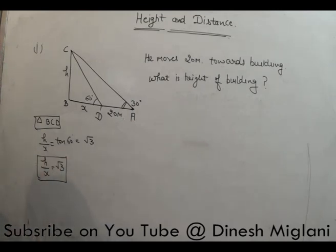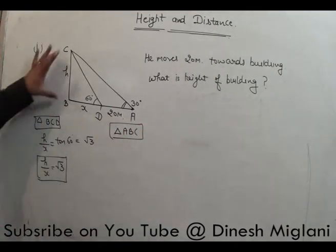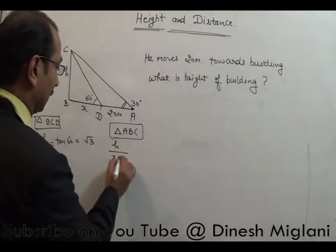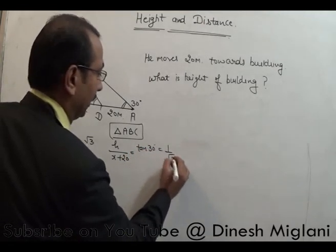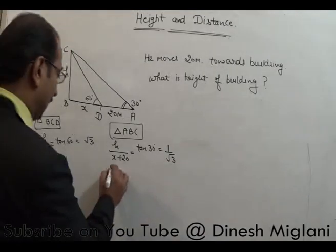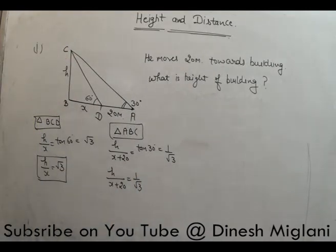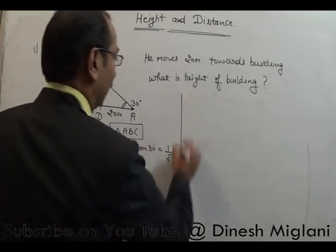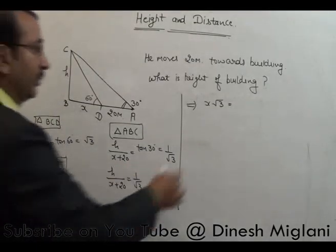Then we take triangle ABC. Here, perpendicular upon base gives H upon (X plus 20) equal to tangent 30, which is 1 by root 3. So H upon (X plus 20) equals 1 upon root 3. Now we have two equations. From the first equation, H equals X root 3. From the second, H equals (X plus 20) upon root 3.